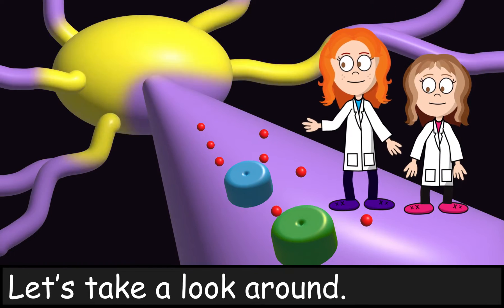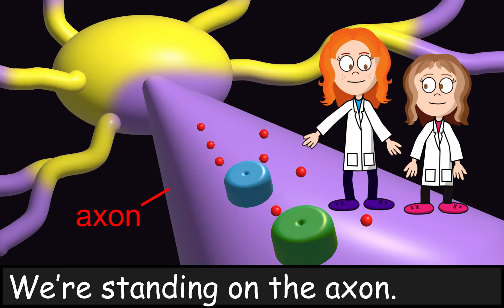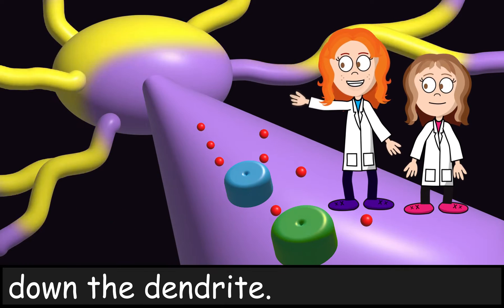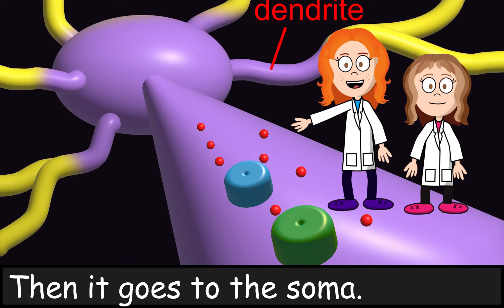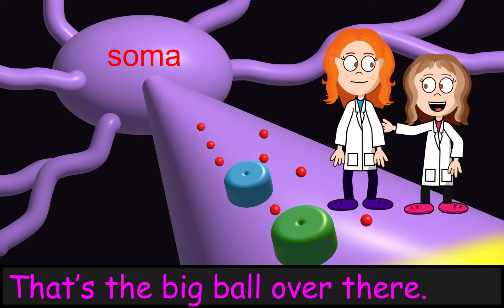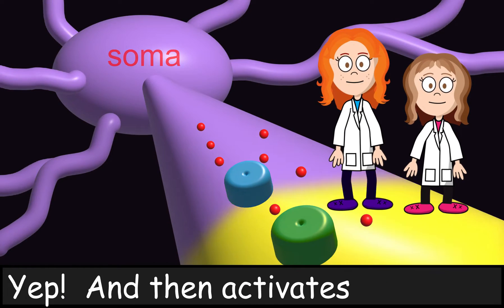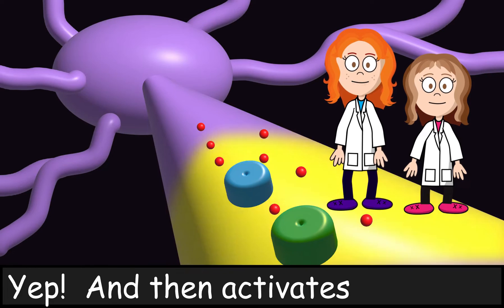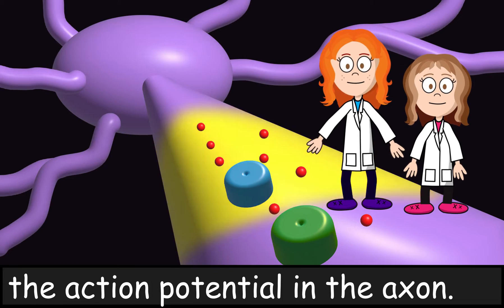Let's take a look around. We're standing on the axon. The signal travels down the dendrite. Then it goes to the cell body. That's the big ball over there. Yep! And then activates the action potential in the axon.